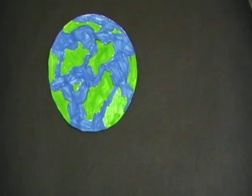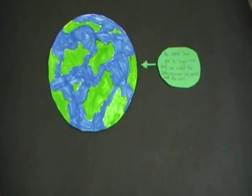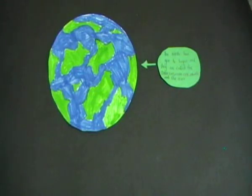The earth has got four layers and they are called the inner core, outer core, the mantle and the crust.